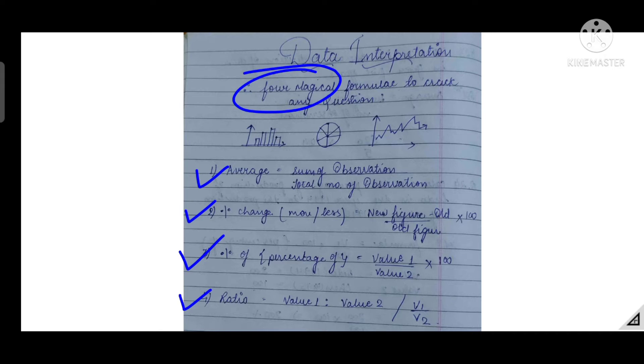DI is the short version of data interpretation. Average is equal to sum of observations upon total number of observations. If they are asking you in the question that the graph is given, find the average. The number of observations comes in total number of observations.